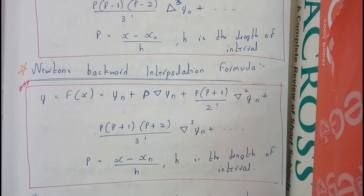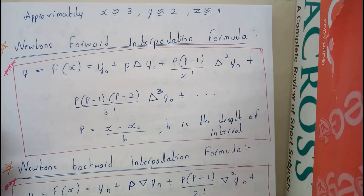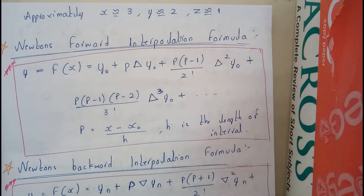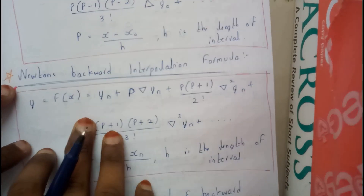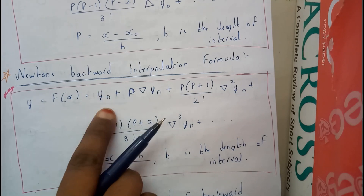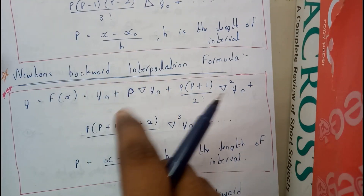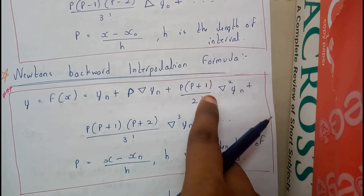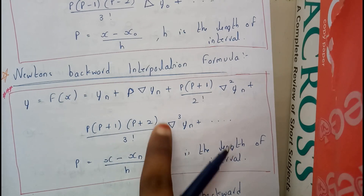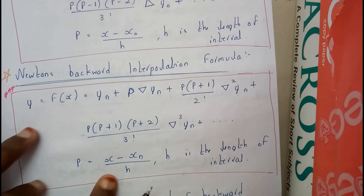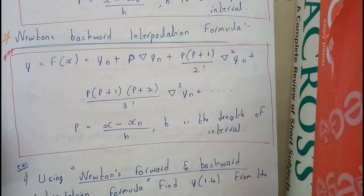Now let us go through Newton backward interpolation formula. The main difference is we insert plus instead of minus, and the delta symbol is inverted (∇). The formula is: y = f(x) = yₙ + p·∇yₙ + p(p+1)/2! · ∇²yₙ + p(p+1)(p+2)/3! · ∇³yₙ + and so on, where p = (x - xₙ)/h.